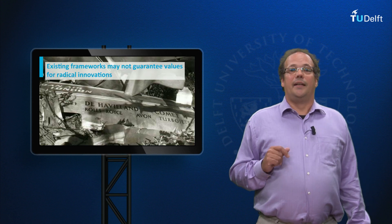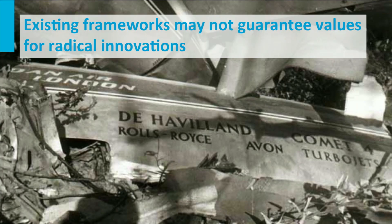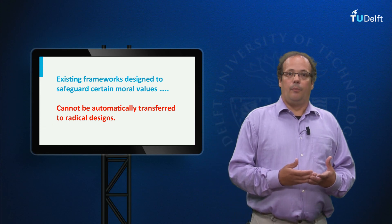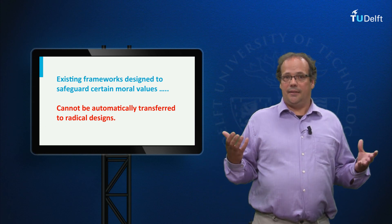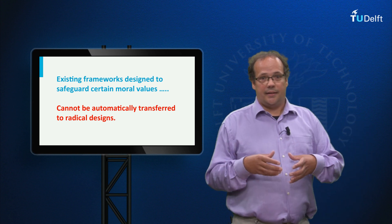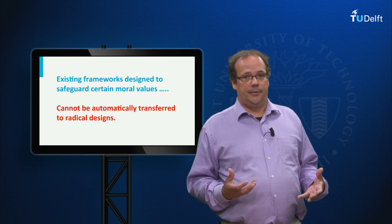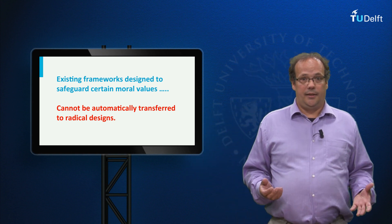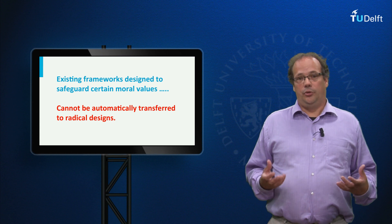An example of this is the introduction of the jet engine in civil aviation — this was a radical innovation. Not very long after the jet engine had been introduced, two airplanes named the de Havilland Comet crashed. The problem was not the engines themselves, but the fact that jet-powered planes fly much higher. Therefore the cabin had to be pressurized to make flying comfortable for passengers. As a result, some points of the fuselage were subject to greater stresses than before, leading to metal fatigue and ultimately to disaster.